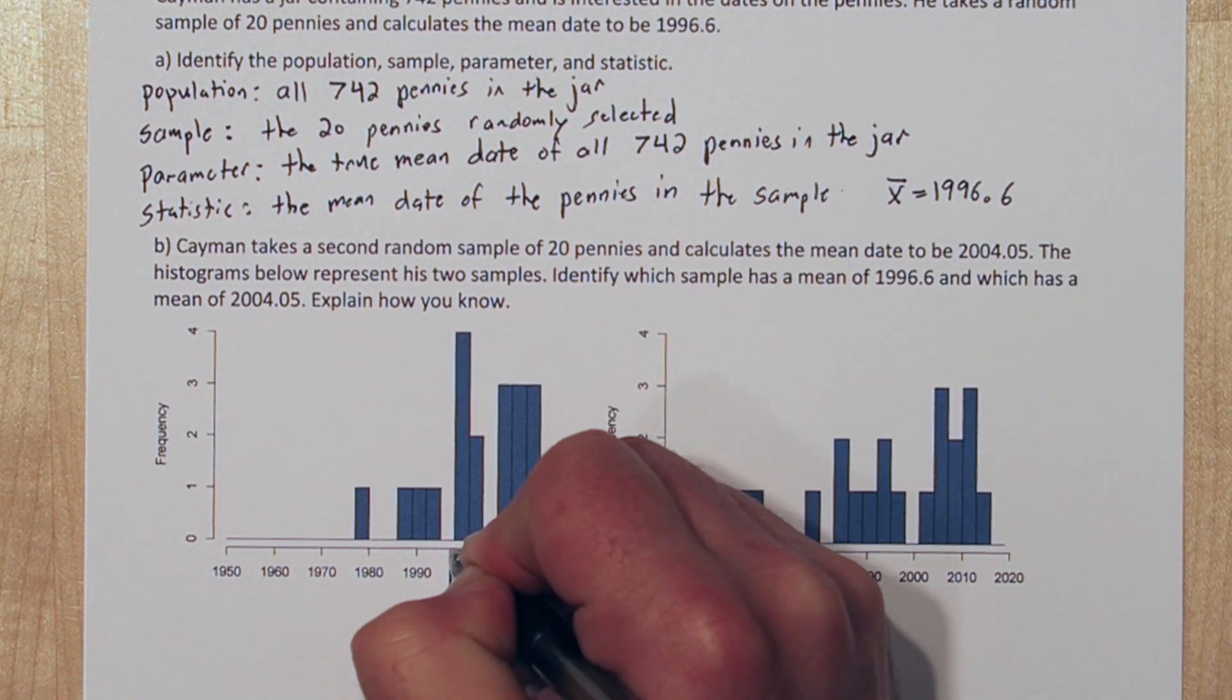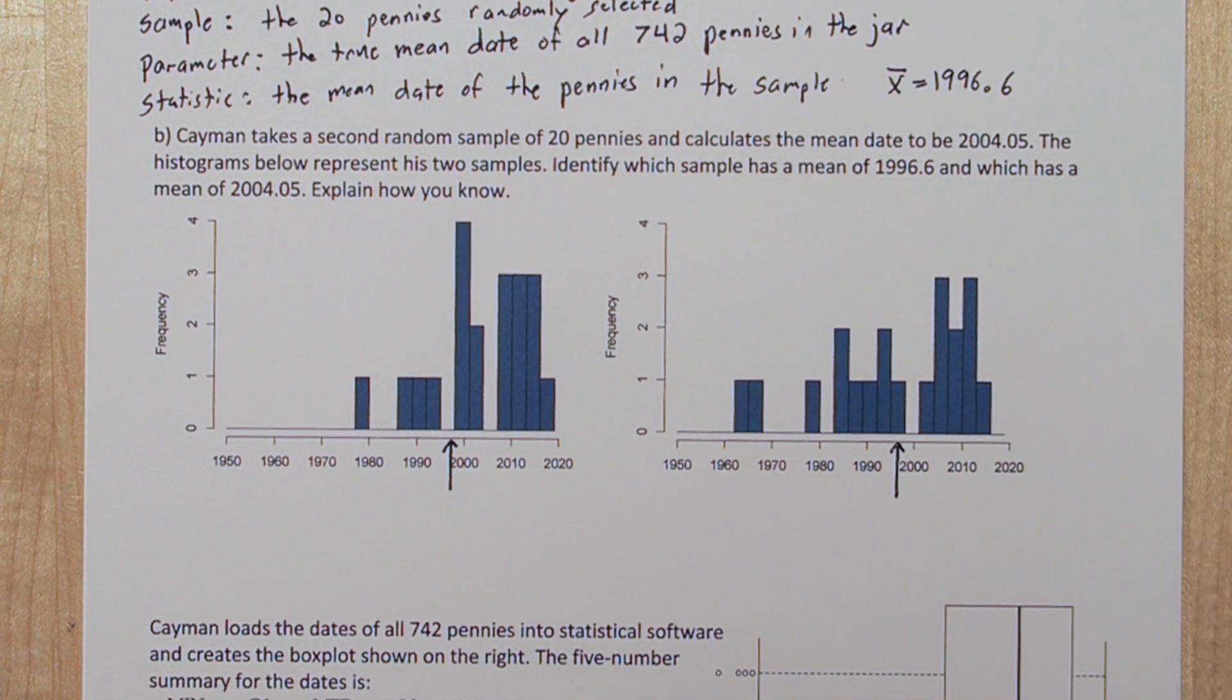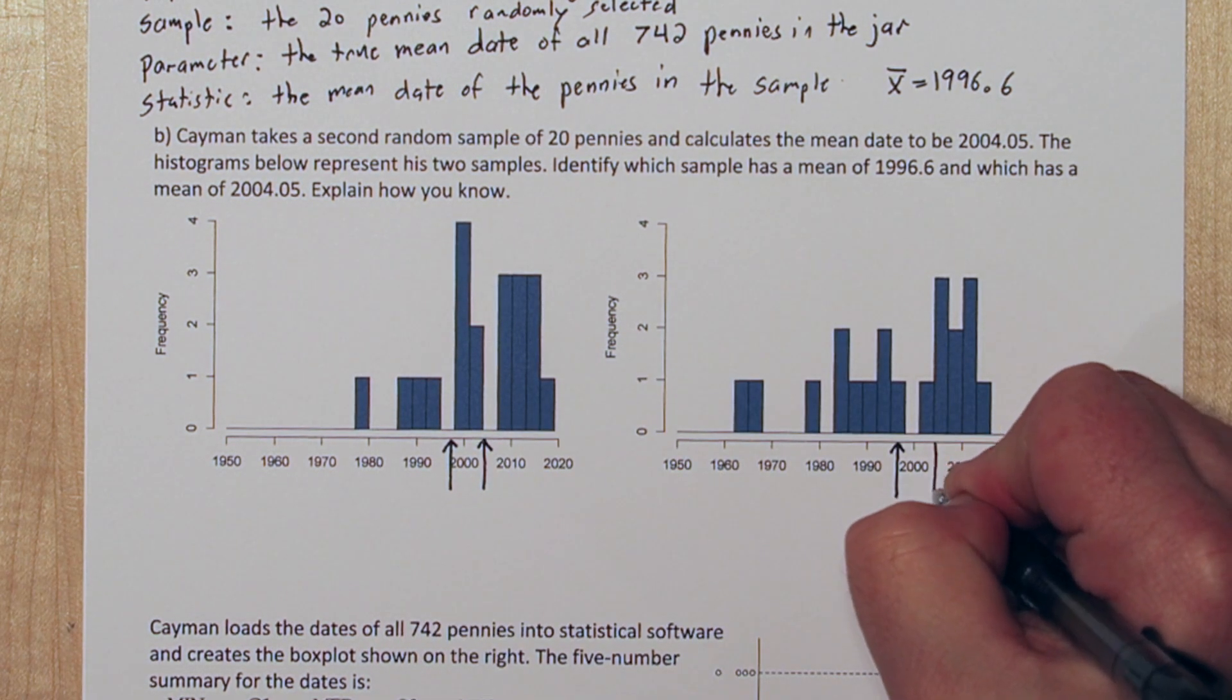For part b, let's start by drawing arrows at 1996.6 and 2004.05.